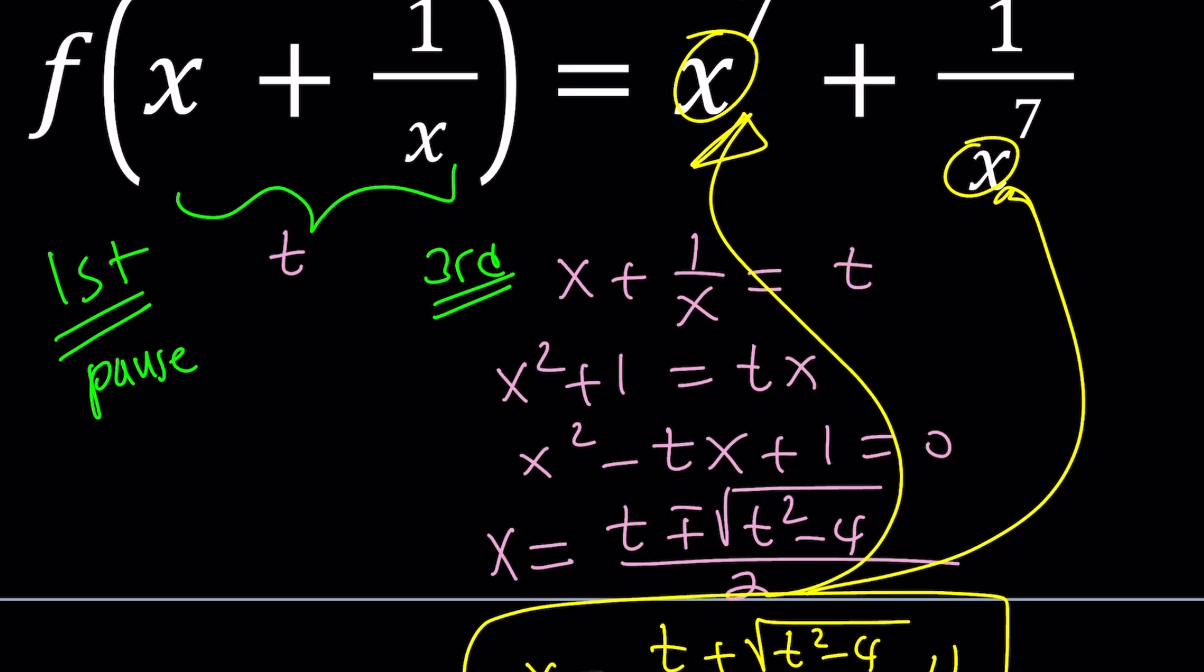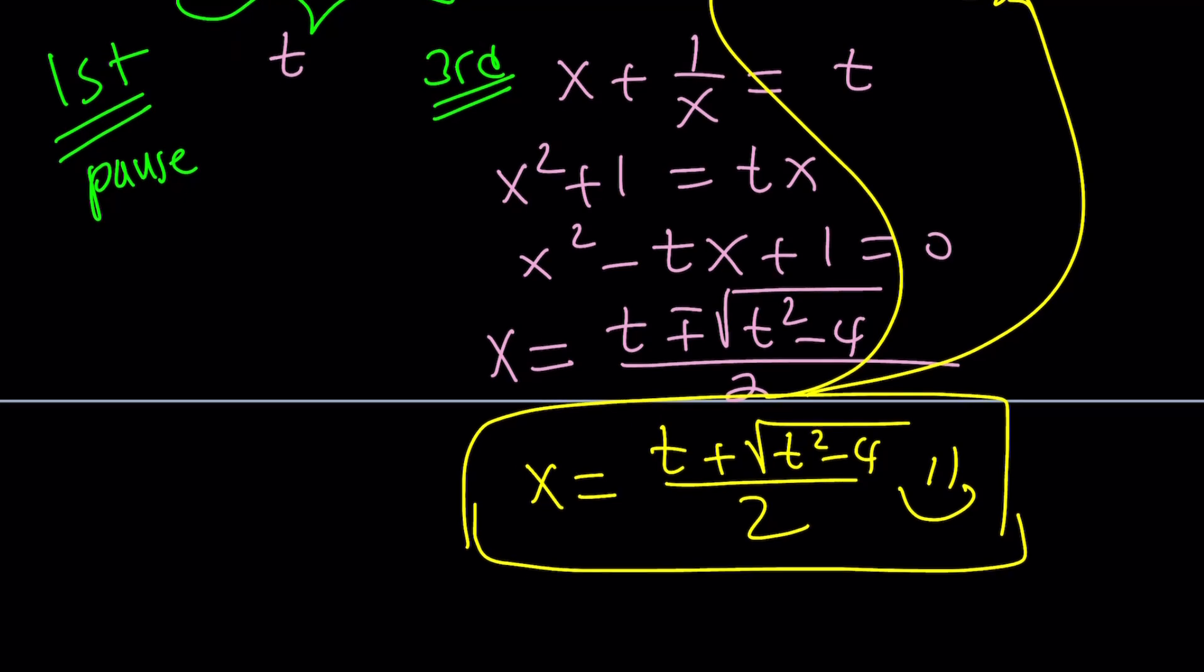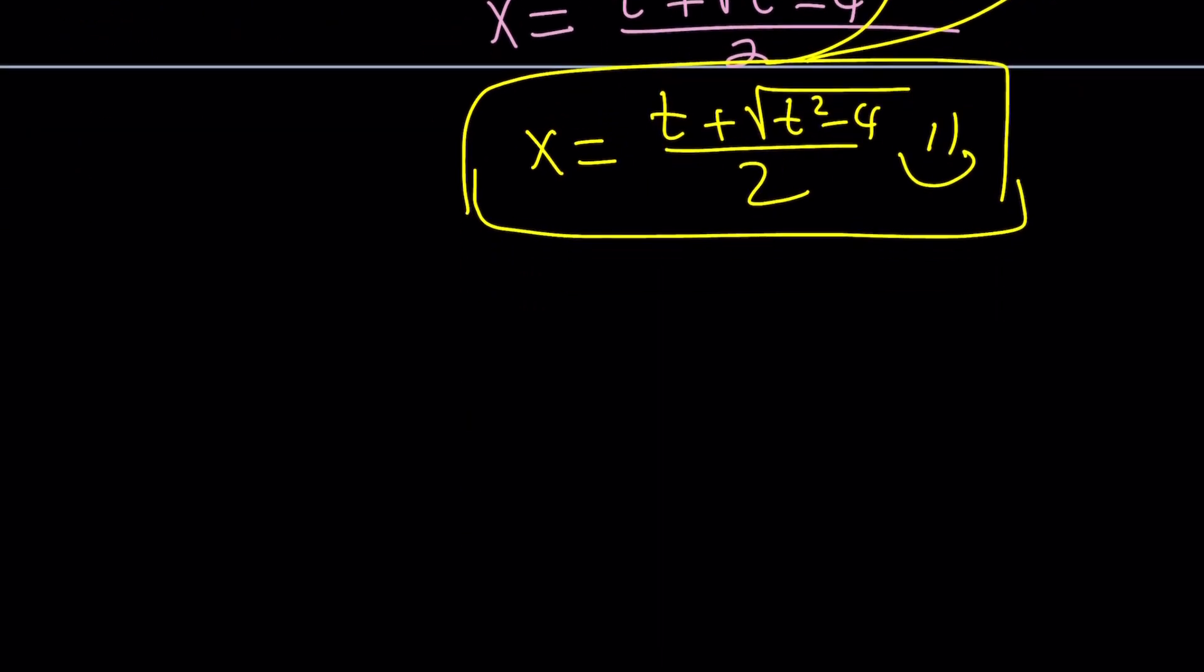That should give you f of t, and our goal is to solve for f of some variable, hopefully x. It doesn't matter. It's not the same x, by the way. Hopefully you can do that. Let me know if this method actually will give you the answer we come up with with the first and second method.